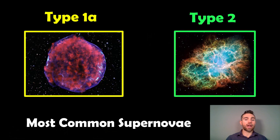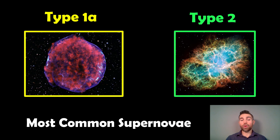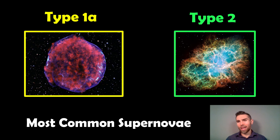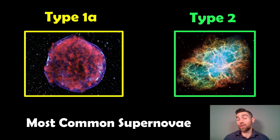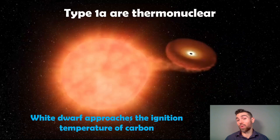Before we do that, let's just have a quick recap of supernovas if you haven't had a look at these before. The most common types of supernovas are the Type 1a and Type 2, and they're basically created by different things. You see slightly different things, and different things are left over from them as well.